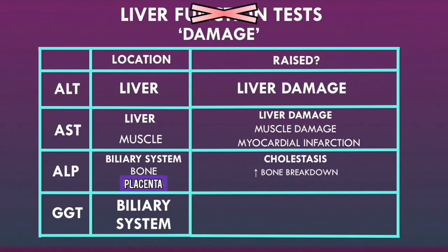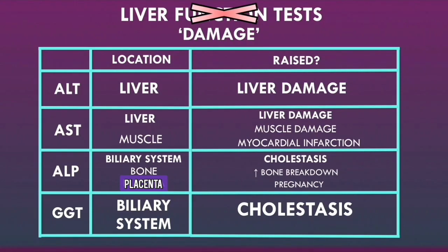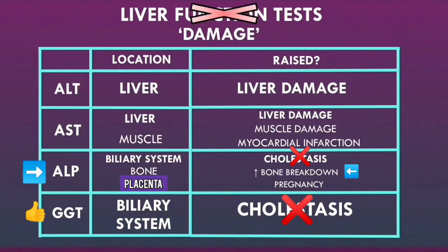Because ALP enzymes are found in the placenta, there can be an increase in ALP levels during pregnancy. The GGT enzymes are very specific to the biliary system, so whenever there is cholestasis, GGT will typically be raised. When both ALP and GGT are elevated, this is highly suggestive of cholestasis. If there is only an isolated increase in ALP with normal GGT levels, this suggests the raised ALP is not due to cholestasis — it more likely indicates increased bone breakdown or, if the patient is a woman, pregnancy.